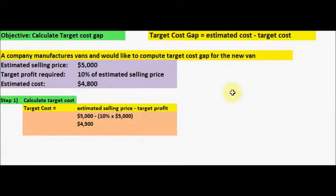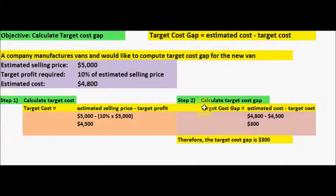So now we do have our target cost and estimated cost right here. Basically step 2 is to calculate the target cost gap, which is simply estimated cost minus target cost.